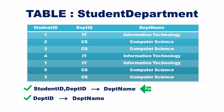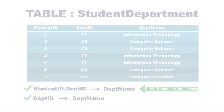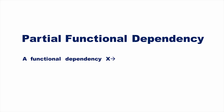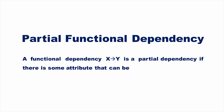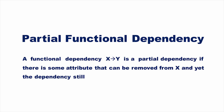Hence, we say that student ID and department ID determining department name is a partial functional dependency. A functional dependency X determines Y is a partial dependency if there is some attribute that can be removed from X and the dependency still holds.